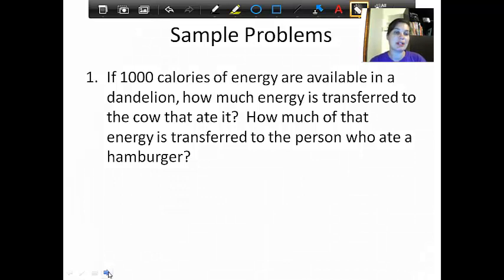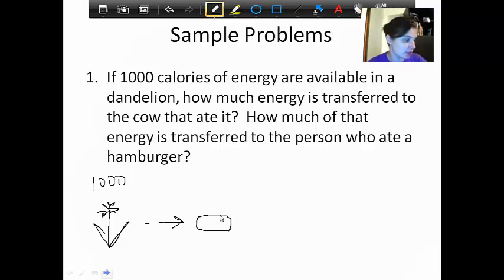Sample problem one says if 1000 calories of energy are available in a dandelion, so I'm going to draw our little dandelion here. Here's the dandelion. And it has 1000 calories of energy. How much energy is transferred to a cow that ate it? Make a semblance of a cow. There he is. And then how much energy from that is transferred to the person who ate the cow, in other words they ate a hamburger. So then we're going to draw a little stick person here.